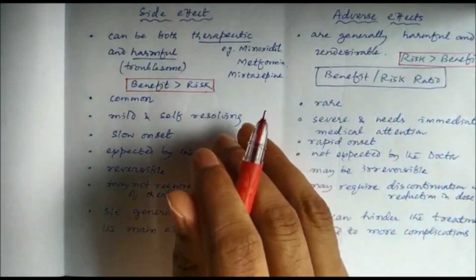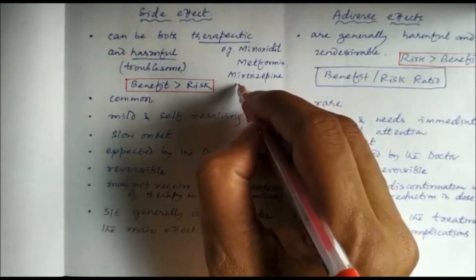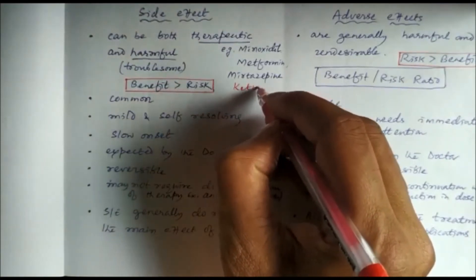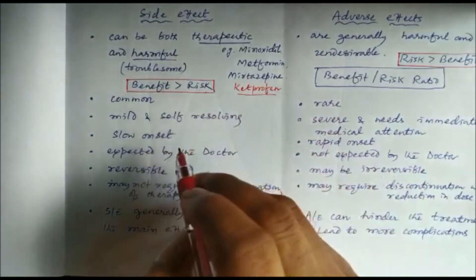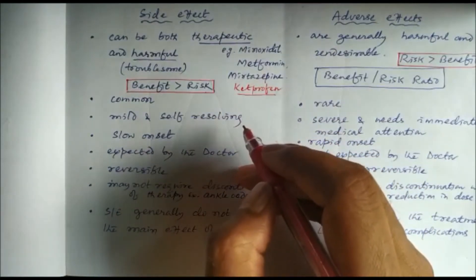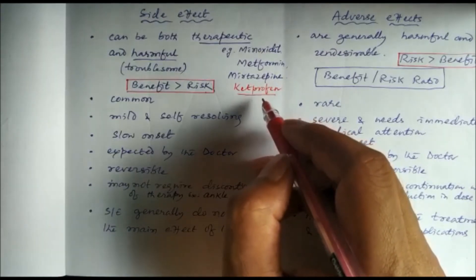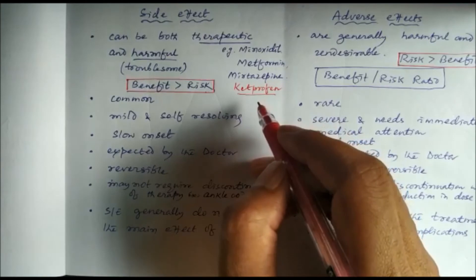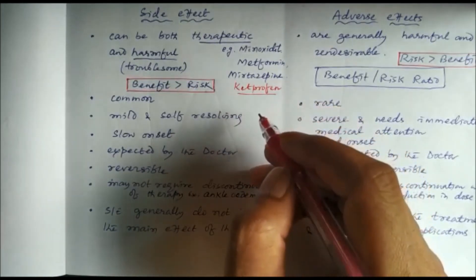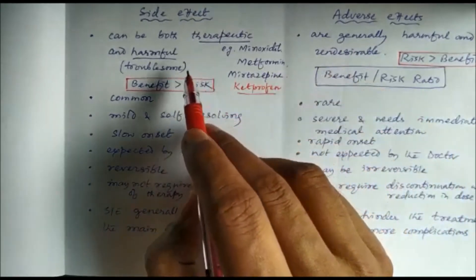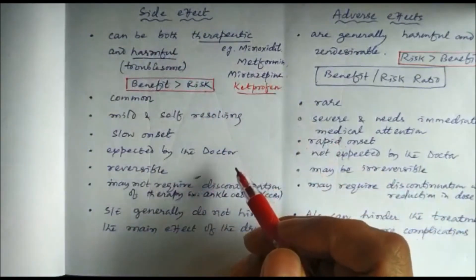Another example is ketoprofen, an NSAID with a side effect of breast enlargement. For a woman who desires breast enlargement, it is advantageous; for a woman who does not want it, it becomes an adverse effect. So the same side effect can be beneficial or harmful depending on the individual patient.